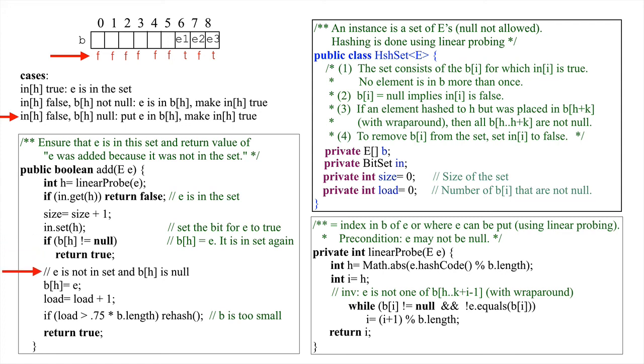Finally, since b[h] is null, e is stored in b[h] and the load is increased by one. Since one more element of b is non-null. The set is rehashed if necessary and true is returned since e was added to the set.